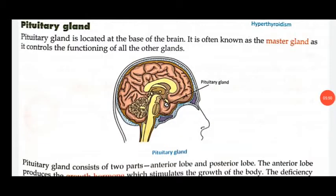The first gland is the pituitary gland, which is present in the uppermost portion of our body, near the brain. Pituitary gland is located at the base of the brain.